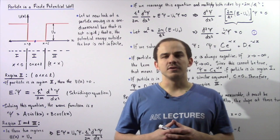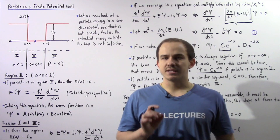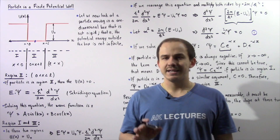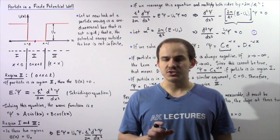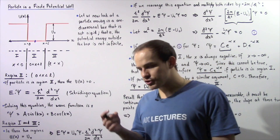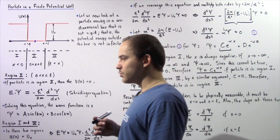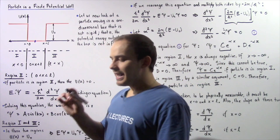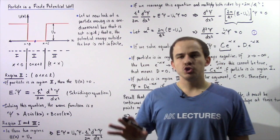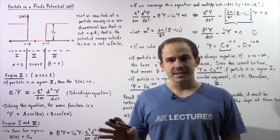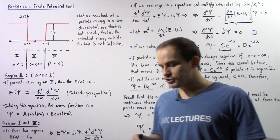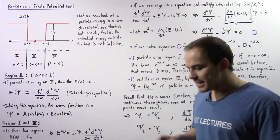In the previous several lectures, we discussed a particle moving inside a rigid box — also known as an infinite potential well — where the particle is confined and cannot move outside.